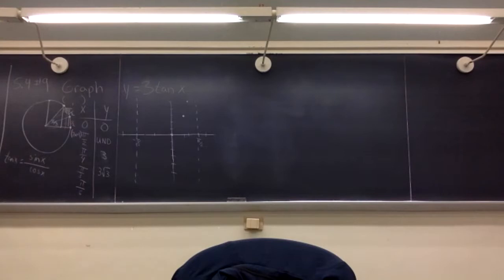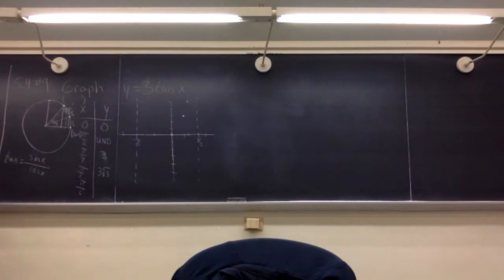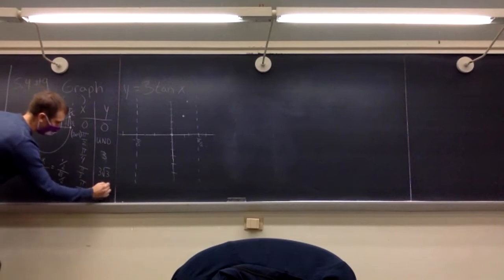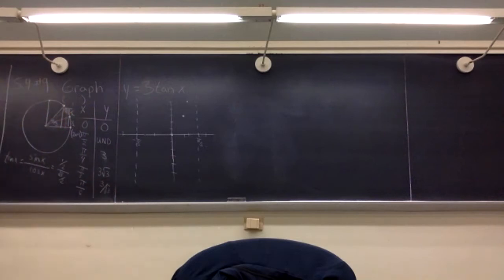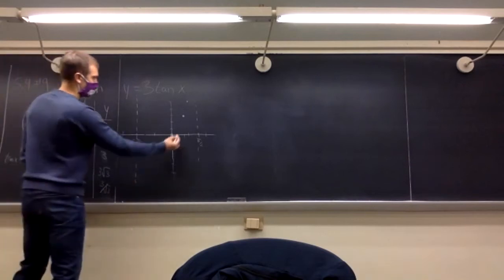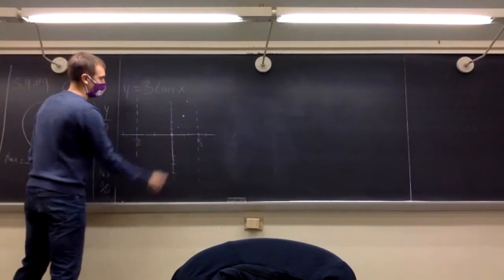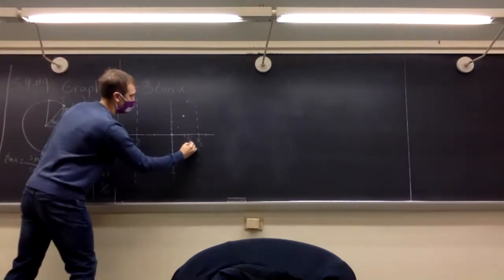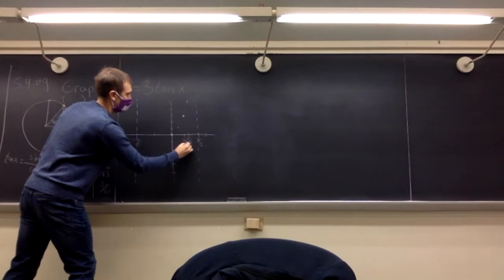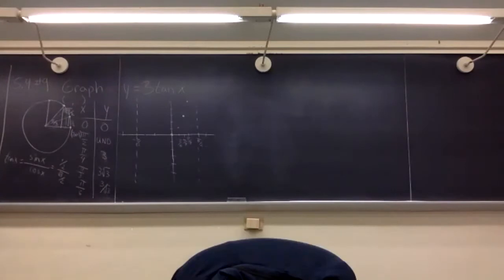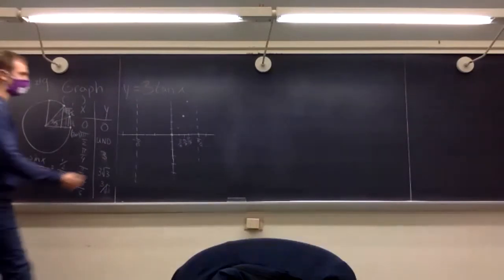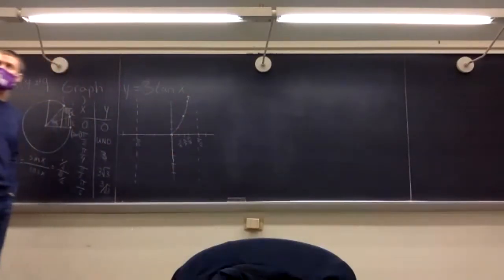At pi over six, we have the opposite situation: one half divided by root three over two gives one divided by root three, or three divided by radical three. Root three is approximately 1.7, so we're getting less than 1.5 for the tangent value times three. So we put it approximately just below 1.5 on the graph.